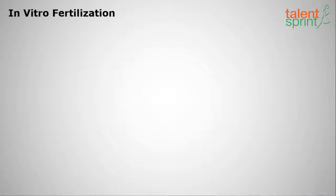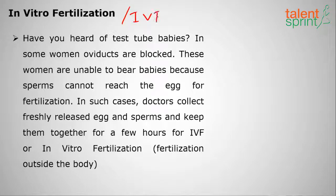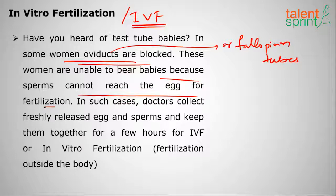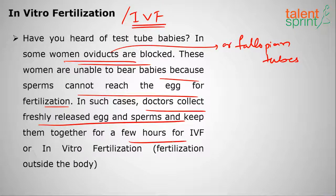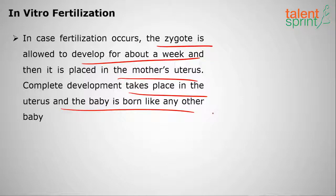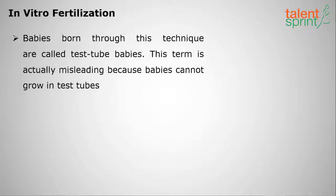In vitro fertilization (IVF) is used when there are problems with childbirth. In some women, the fallopian tubes are blocked, so sperm cannot reach the egg. In such cases, doctors collect freshly released eggs and sperms and keep them together for a few hours — this is IVF. If fertilization occurs, the zygote is allowed to develop for about a week and is then placed in the mother's uterus, where complete development takes place.